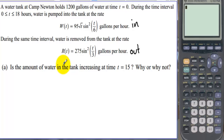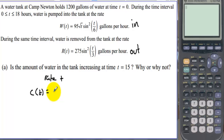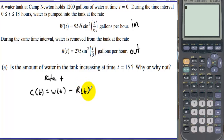Part A: Is the amount of water in the tank increasing at time t equals 15? Why or why not? In other words, is the rate at which the water is changing in the tank positive? The rate at which the water is changing in the tank equals W(t), the rate at which it's being pumped in, minus R(t), the rate at which the water is being pumped out.